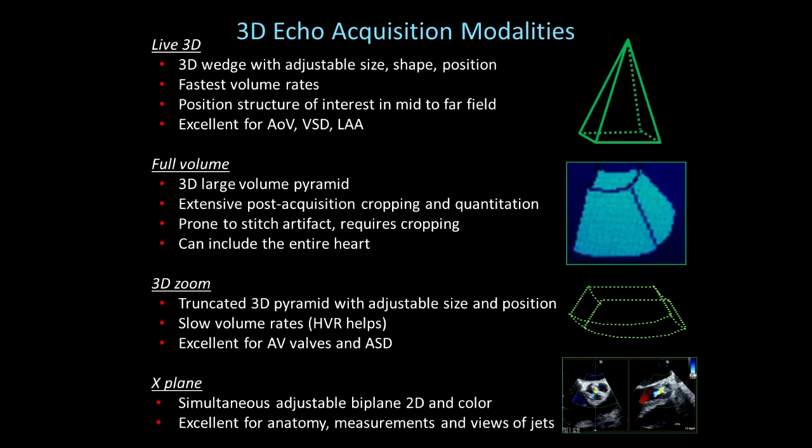3D zoom is excellent for AV valves and atrial septal defects. The fourth acquisition modality is X-Plane, which consists of simultaneous adjustable biplane 2D with color. Just as interventional cath physicians have biplane angiography, we now have live biplane echocardiography with 2D and color. It's excellent for anatomy, measurements, viewing jets, and saving time because we can get two pictures simultaneously.